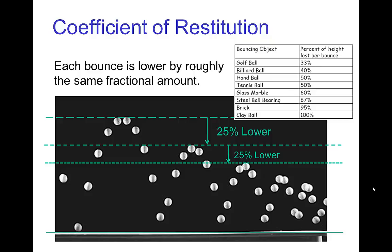So, depending on how elastic or inelastic a material is, it will lose a certain percentage of its height on each bounce. Nothing is perfectly elastic, but a golf ball is more elastic, so it loses about a third of its height per bounce.